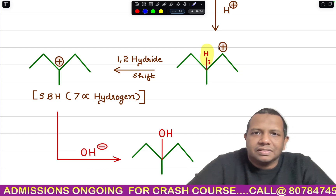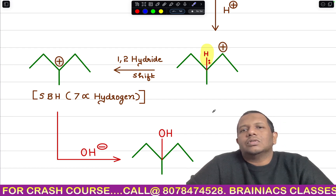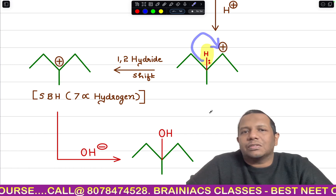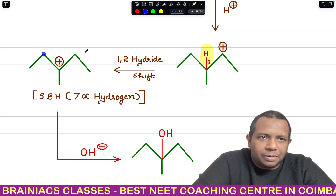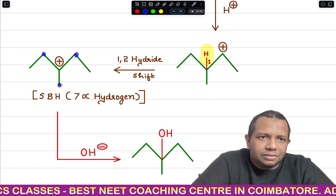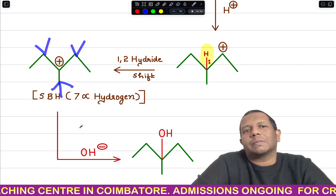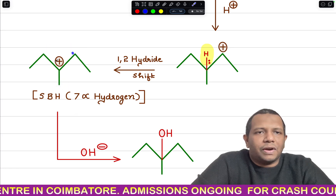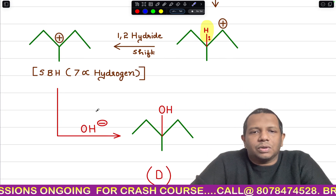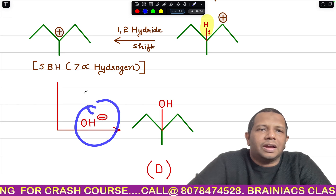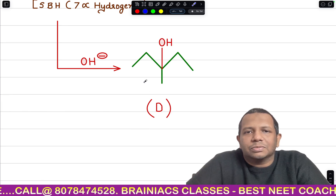H⁺ attacks the negative charge giving a carbocation. Looking at that carbon, only three valencies are present, so the fourth must be a hydrogen with a pair of electrons — hydride shift occurs, migrating to that carbon. The positive charge moves to the new carbon. This alpha carbon has two alpha hydrogens, another two alpha hydrogens, and three more, totaling seven alpha hydrogens, making it highly stable. OH⁻ attacks the positive charge, giving the final product.